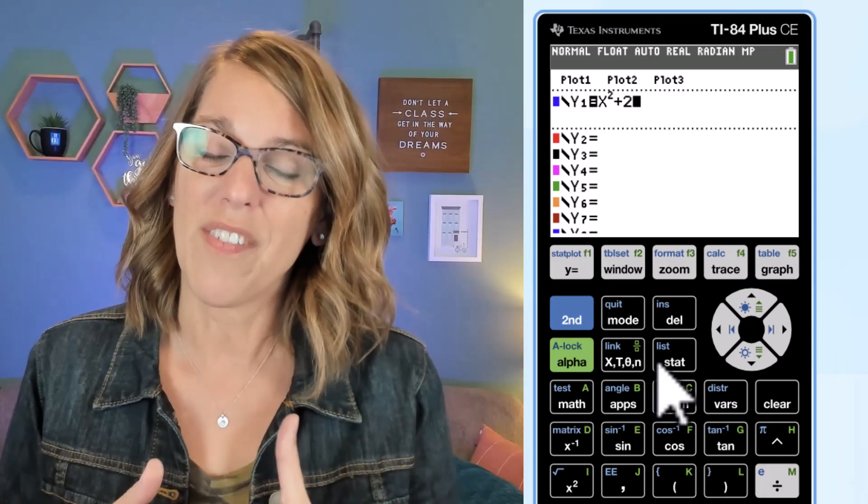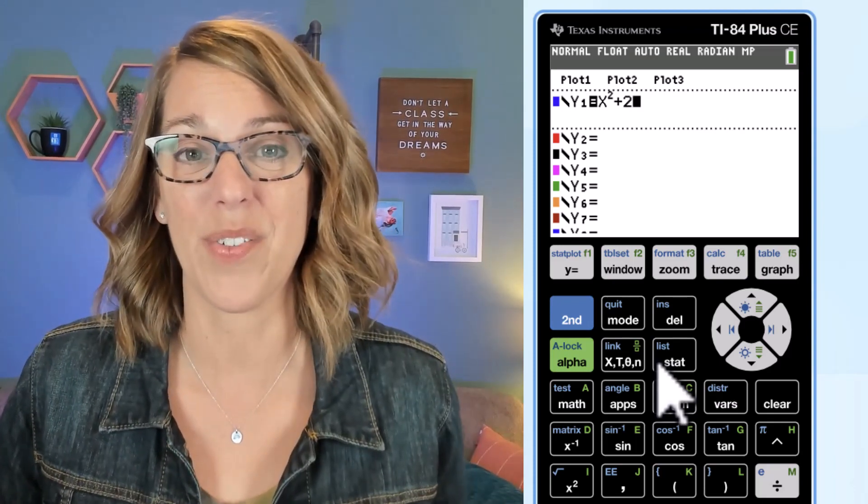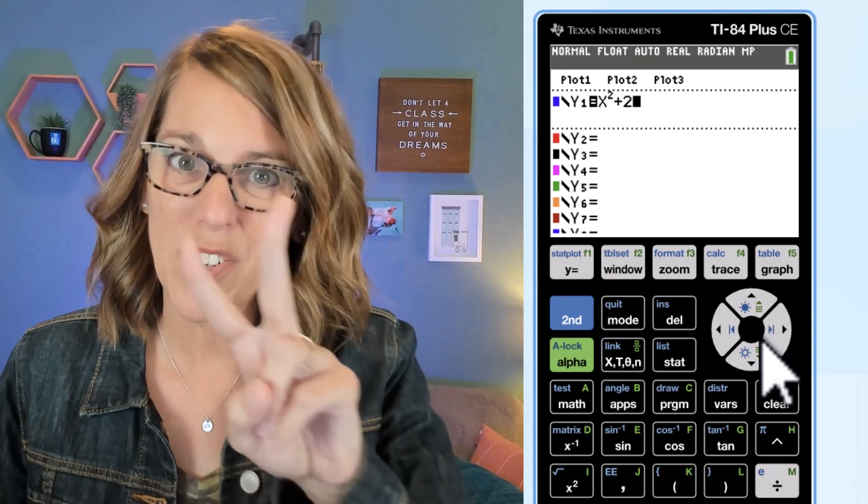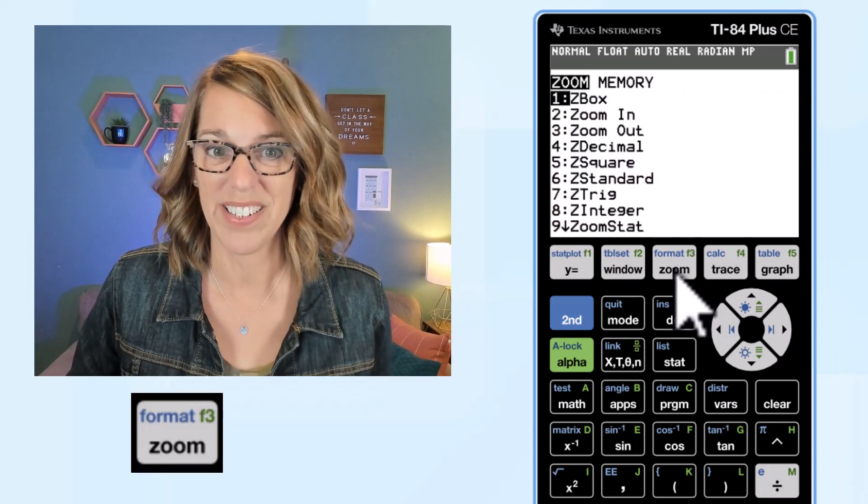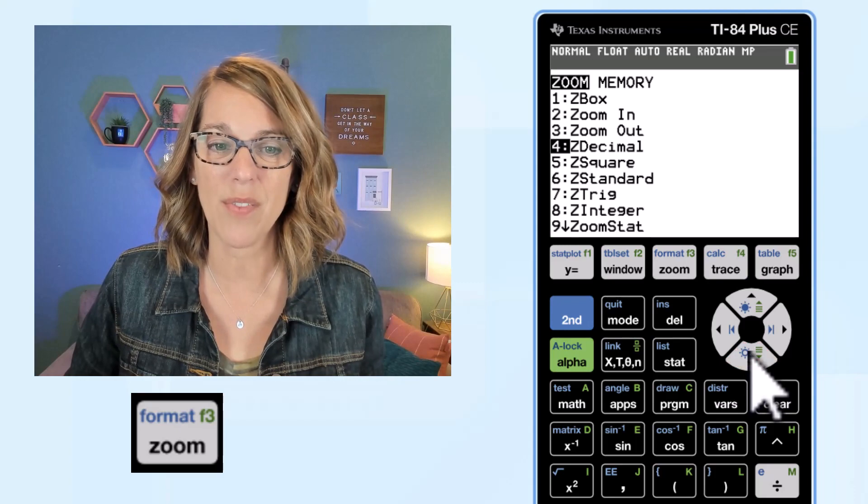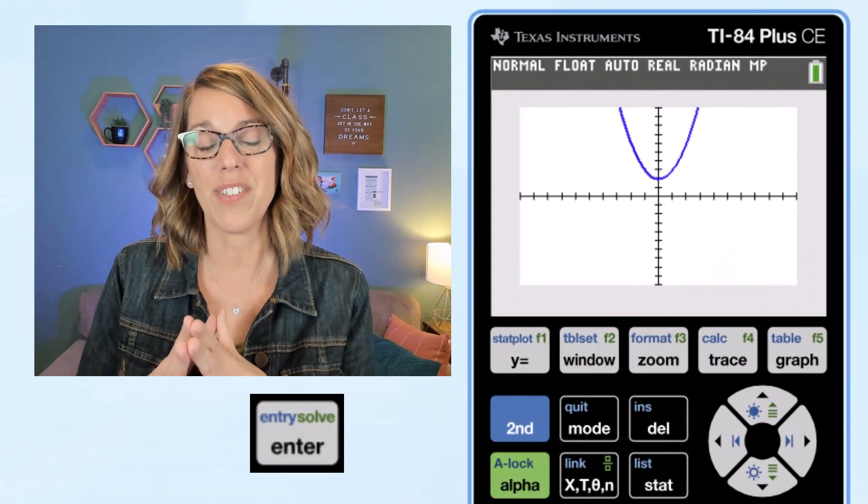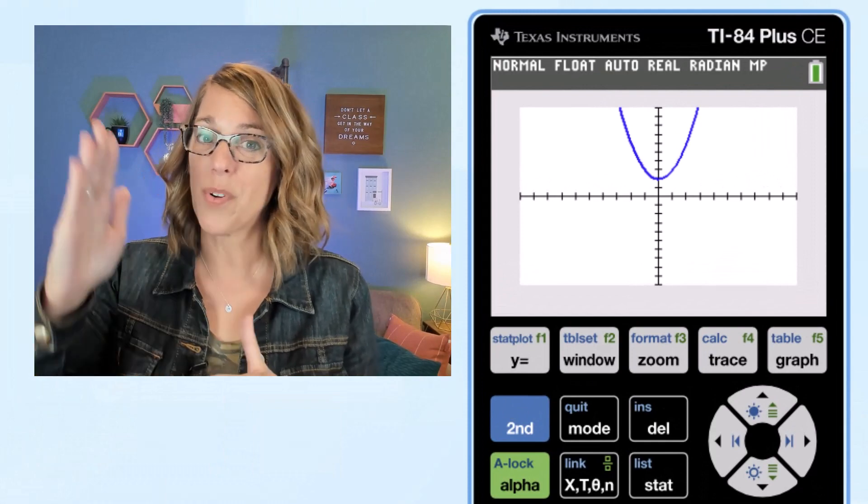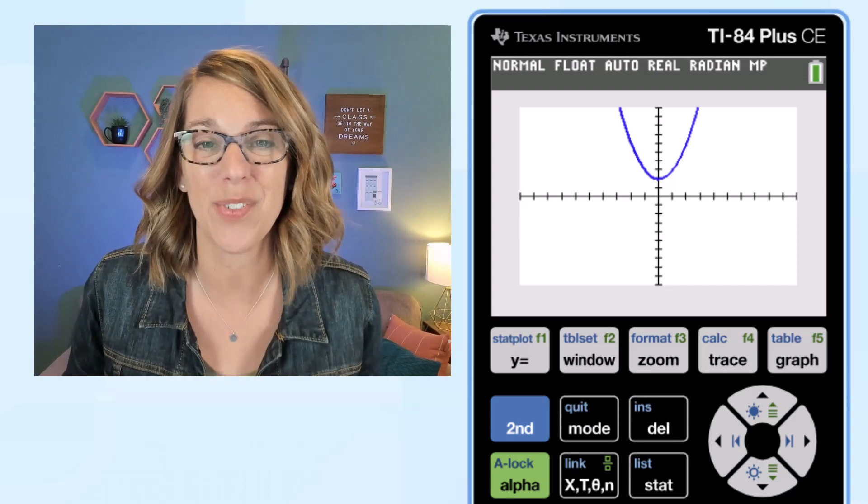Now I want to graph but I want to graph in the right viewing window and your calculator may not be on the correct viewing window. I'm gonna show you two ways of doing that but this first way is by far the easiest way. I'm gonna go to my zoom button and then I'm gonna choose zoom standard. So you're gonna arrow down or you can type the number 6 and then hit enter. Zoom standard gives me the standard viewing screen which is from negative 10 to 10 in both the X and the Y direction.